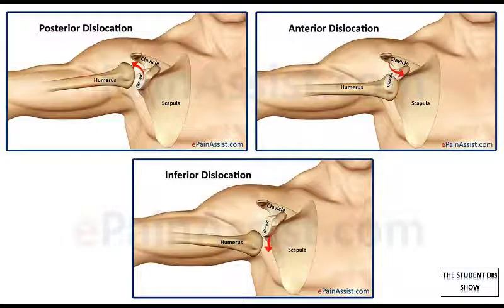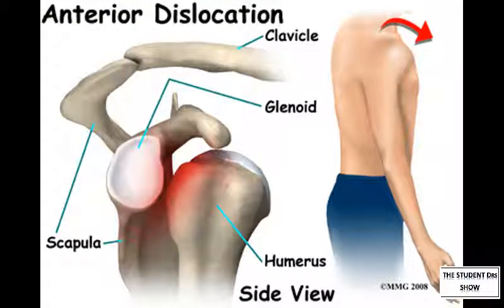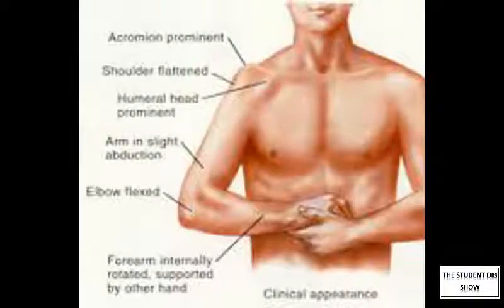There are three directions in which the shoulder can dislocate: anteriorly, posteriorly and inferiorly. Firstly, we'll discuss anterior dislocations, which is the most common, contributing to 90% of shoulder dislocations. There is forced abduction and/or external rotation of the arm, resulting in subluxation or complete dislocation anteriorly. These patients will clinically present with pain in the shoulder and the inability to move the shoulder in any direction and will have their affected arm supported.